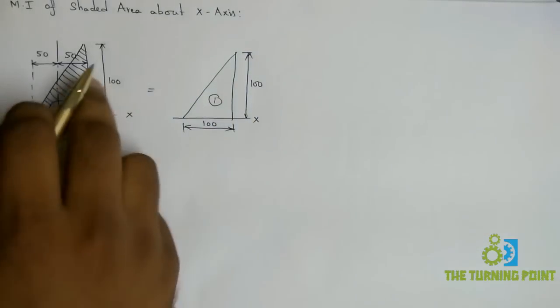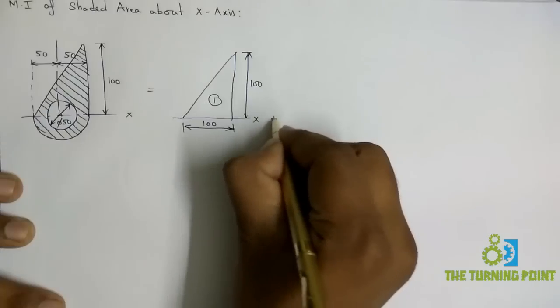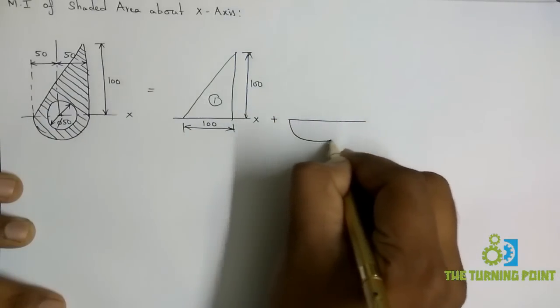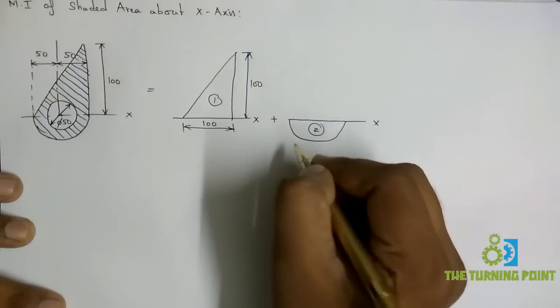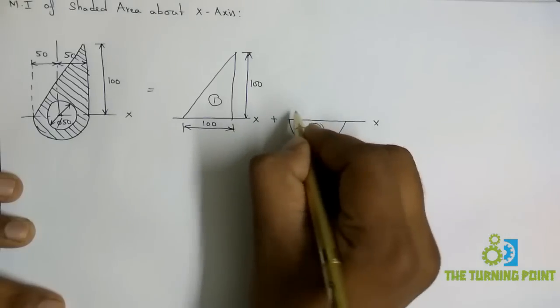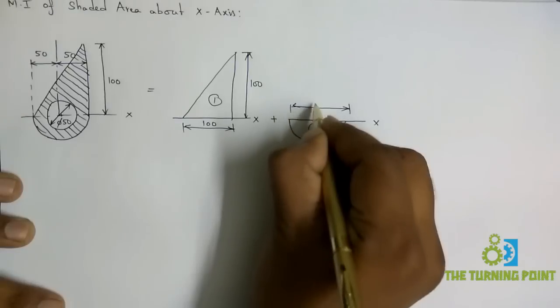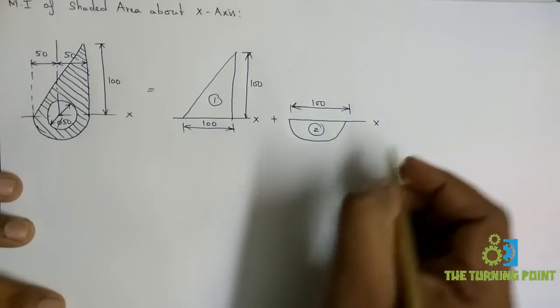To this right-angle triangle you need to add the semi-circle. This is the second geometry. The diameter is given as 100.